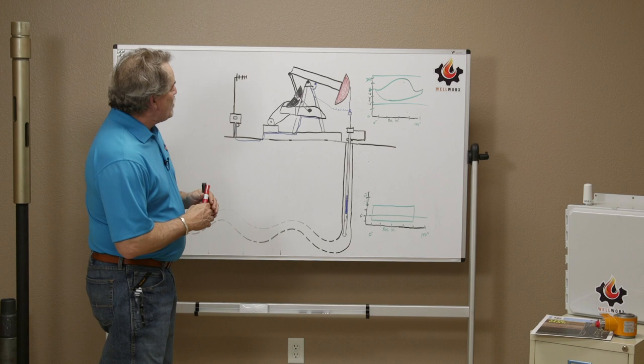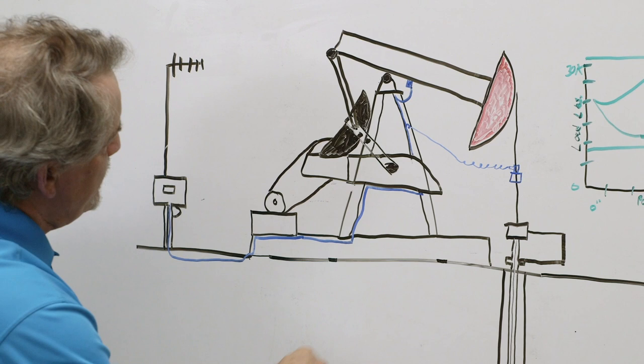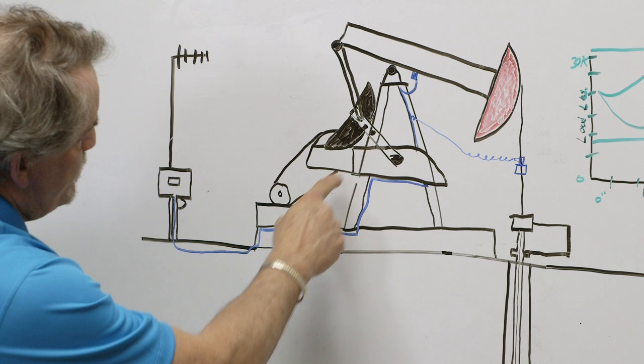I want to start by describing some components of the pumping system. So obviously we have the pumping unit here. The pumping unit has a gearbox right here. We have an electric motor that we're using as the prime mover on this well.